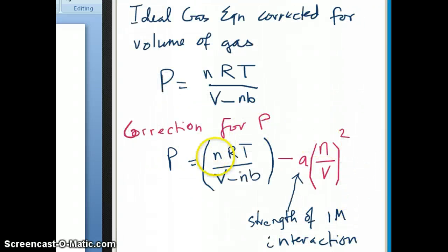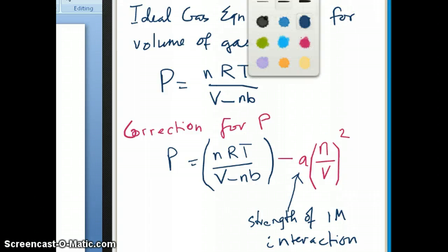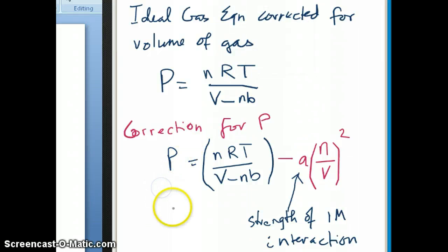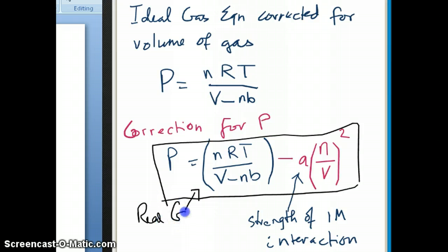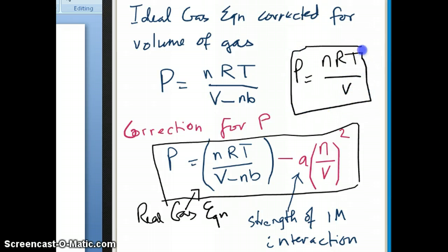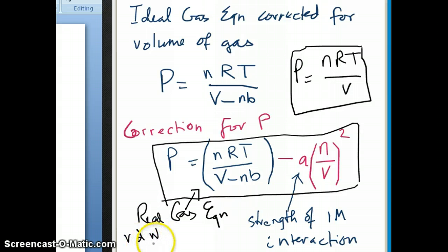This equation — P equals nRT over (V minus nB), minus A times (n over V) squared — is what we refer to as the real gas equation. To differentiate it from the ideal gas equation, which is just P equals nRT over V: once you subtract the volume correction and subtract the pressure as a result of intermolecular interaction, you get the real gas equation. This is also called the Van der Waals equation, or Van der Waals' equation for real gas.